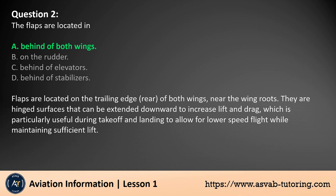The answer is A. Flaps are located on the trailing edge of both wings, near the wing roots. They are hinged surfaces that can be extended downward to increase lift and drag, which is particularly useful during takeoff and landing to allow for lower-speed flight while maintaining sufficient lift.